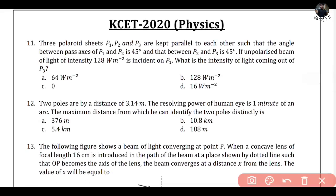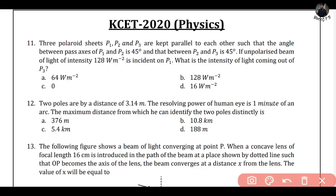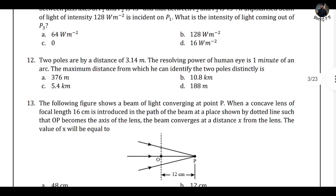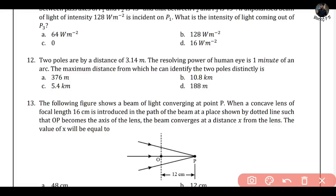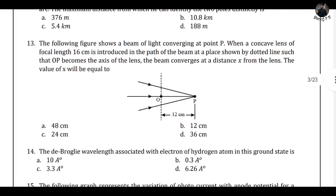The 11th question: options are 64, 128, 0, 16. The second largest number is 16. Note: 0 is also a number, keep that in mind when looking at options. The 12th question: options are 3.76, 10.8, 5.4, 188. 10.8 is the second largest number — I'm not looking at SI units. The 13th question is one of the most important questions, and now I'm going to apply the second largest number technique.